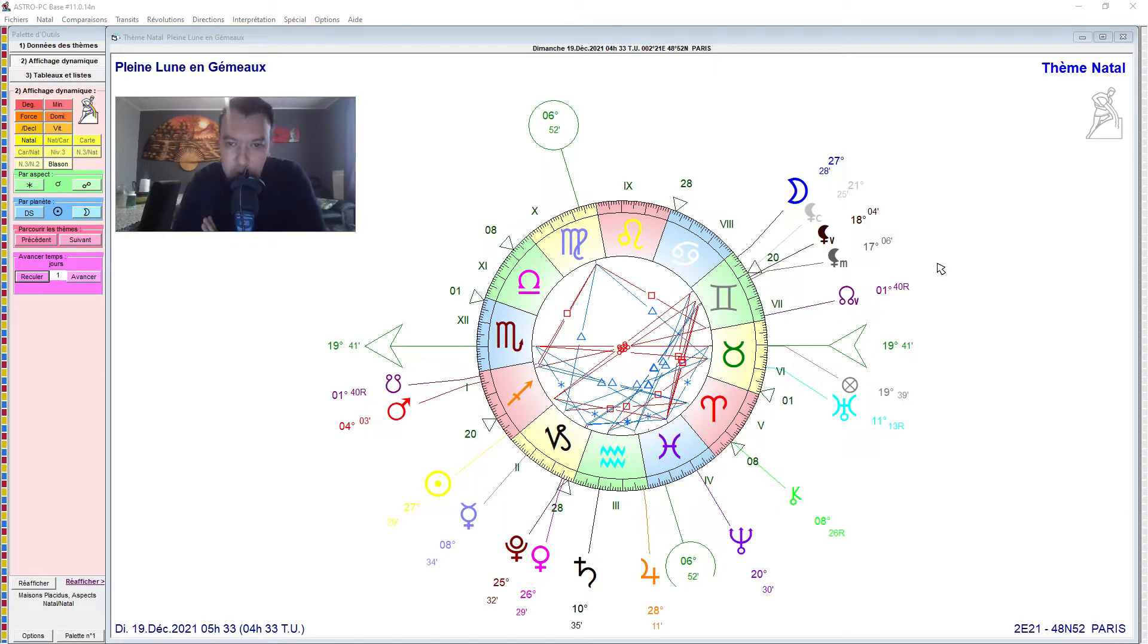Alors je ne connais pas encore grand chose dans ces domaines, mais du peu que j'ai entendu, il y aura un portail énergétique apparemment qui s'ouvrirait, surtout en date du 19 décembre selon certains, selon la pleine lune, qui se terminerait le 21 décembre, donc on aurait le 21, 12, 21. C'est vrai qu'on retrouve des chiffres aussi un peu similaires, donc forte énergie qui se terminerait à ce moment-là.